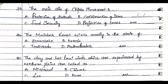Question 23: The main aim of the Chipko movement is. Option A. Protection of animals, Option B. Construction of dams, Option C. Food security, Option D. Protection of trees. The answer is Option D. Protection of trees.